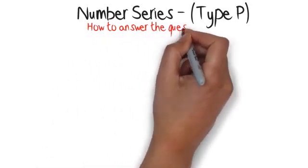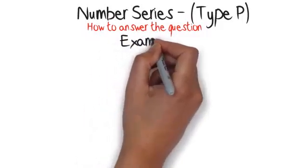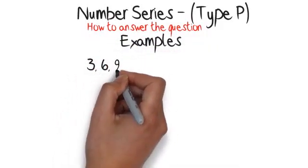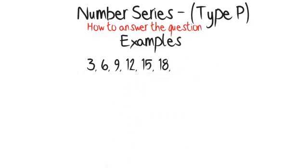How to answer the question: each sequence will have a rule that you will need to find. Once you have found the rule, carry on the sequence using the rule to fill in the gap. Example: three, six, nine, twelve, fifteen, eighteen. First, write down the sequence with enough space for you to draw the rule and label the steps.